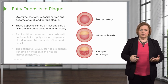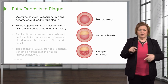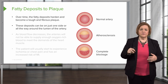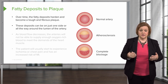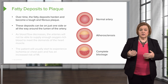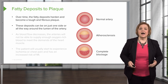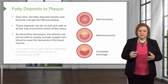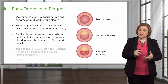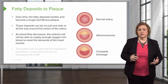So let's look at these deposits. They can be either just on one side or they can be all the way around the lumen of the artery. There's not always a rhyme or reason as to why it happens — it just depends on the extent of the injury, where it occurred, and how the body responded. But as the blood flow decreases, the arteries just can't supply enough oxygen-rich blood to meet the demands of the heart muscle.